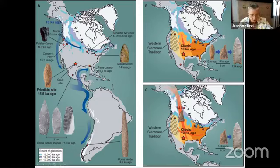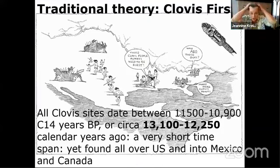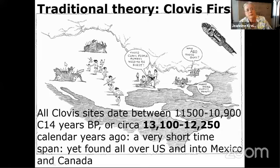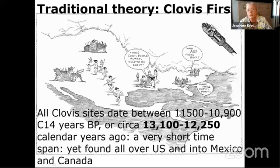There's a great cartoon someone put on an archaeology Facebook page: people running down through western North America killing bison and mastodons with spears, while the people already there say 'those Clovis people always have to be first.' So we're back to our choices: how did Clovis points spread all across the United States in 800 years? We haven't solved that yet, but it's fascinating.